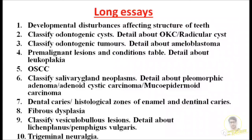The third question can be about the classification of odontogenic tumors, and you must be thorough about ameloblastoma. The fourth important question is pre-malignant lesions and pre-malignant conditions. That particular tabular column is given in Shafer's textbook, 8th and 9th edition. See the pre-malignant lesions and conditions table, and learn the detail about leukoplakia — the histopathology and diagram — very thoroughly.